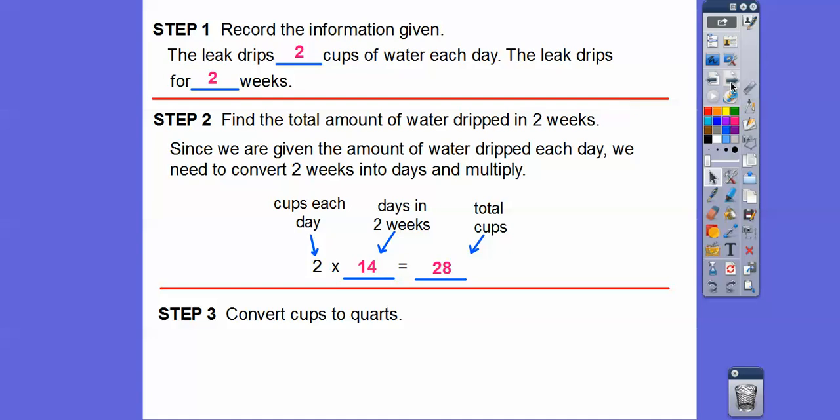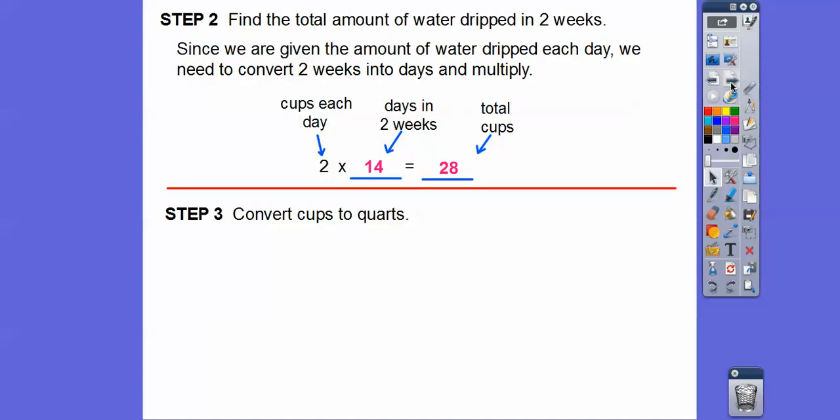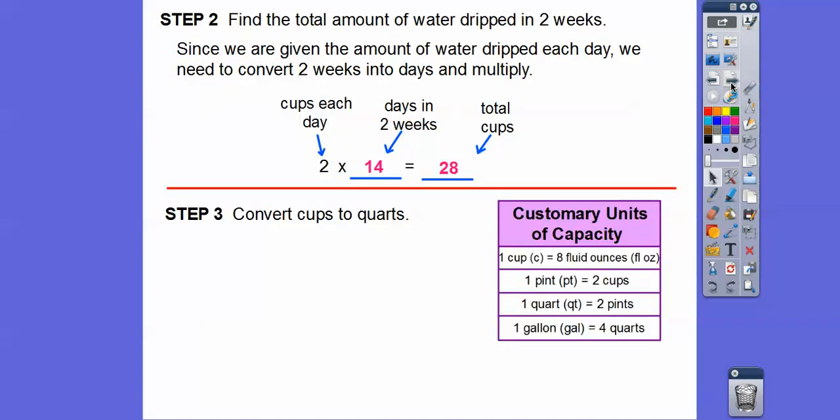Now we're going to convert the cups to quarts. Here's our conversion. There's two cups in a pint, and then for every two pints, there's a quart. So we've got to convert these 28 cups to quarts. Two cups in each pint, and there's two pints in each quart.